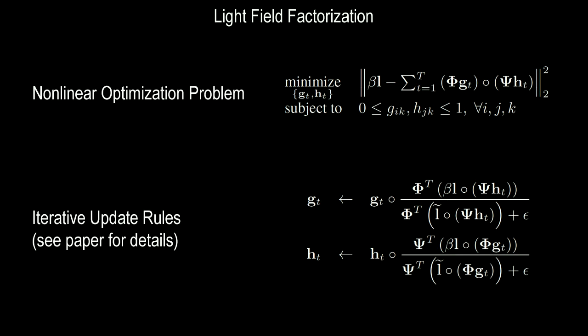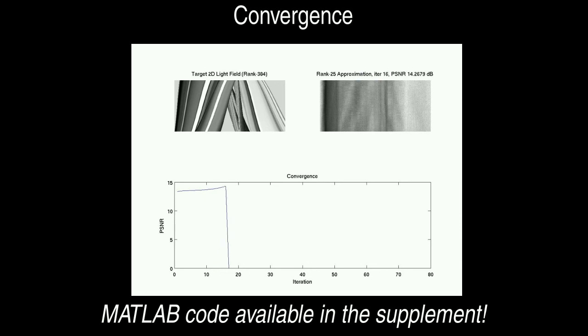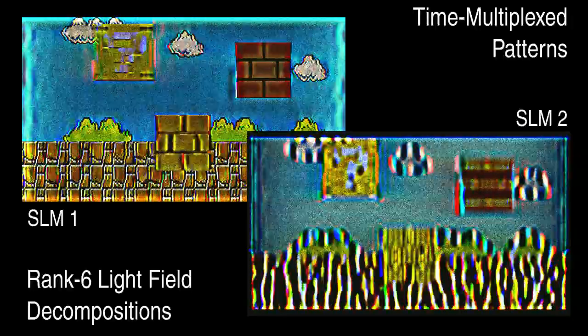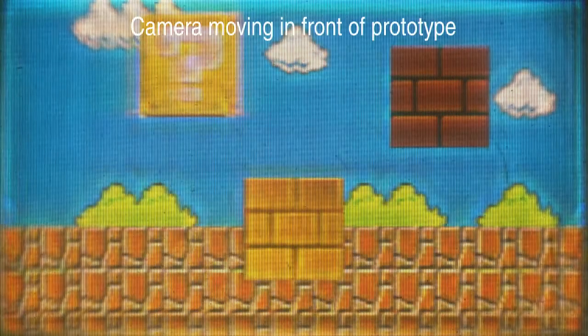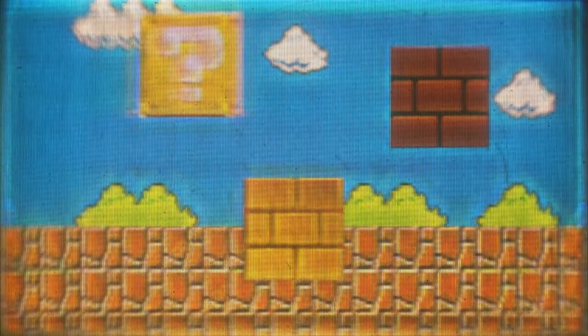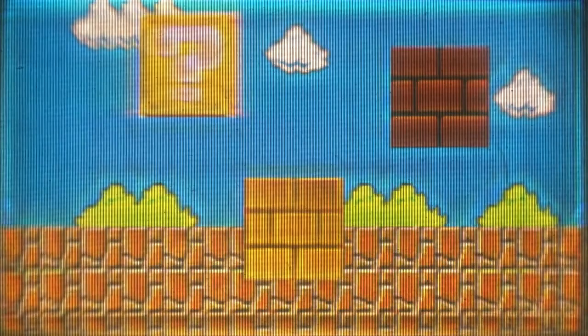We use non-linear optimization techniques to factorize target light fields into low-rank representations that map directly to pixel states of the display. These algorithms are implemented on the GPU for efficient processing. Here is a typical result of the algorithm. Pairs of patterns are automatically computed and displayed on the SLMs at high speed. The high-frequency, time-multiplexed patterns are fused by the human visual system into a consistent representation of the 3D scene over a viewing range.